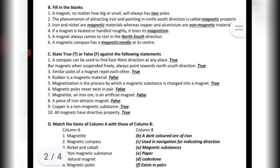Magnetite and iron ore is an artificial magnet. False. A piece of iron attracts magnet. False.